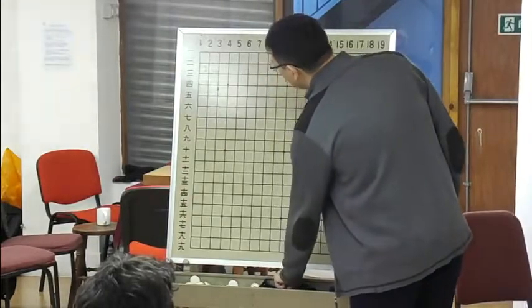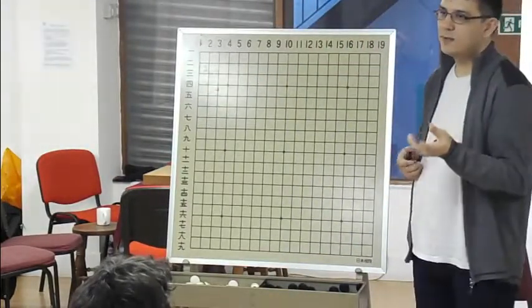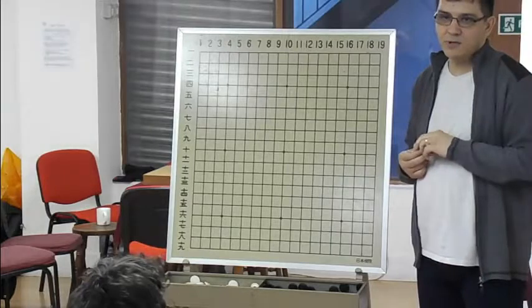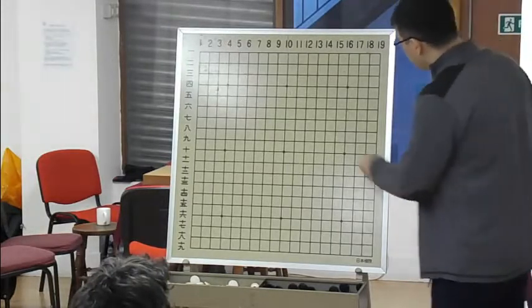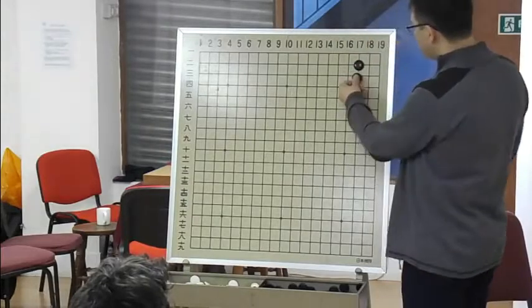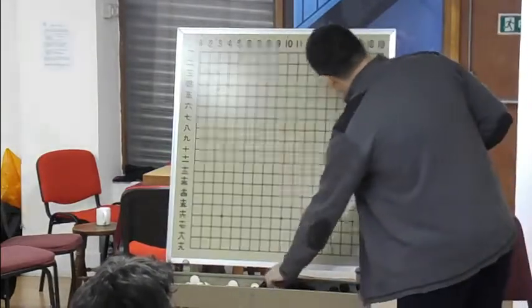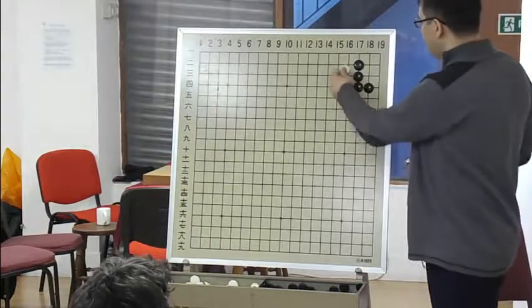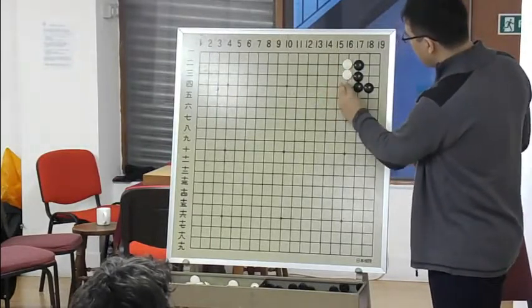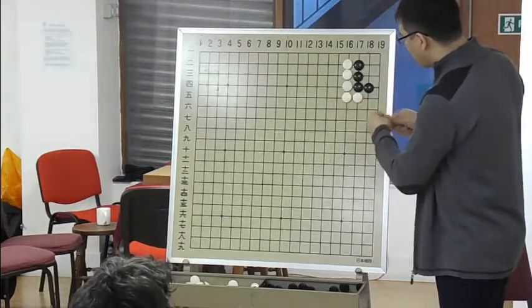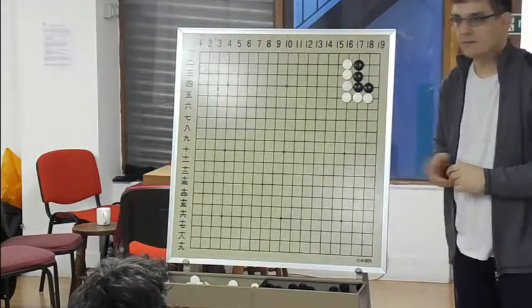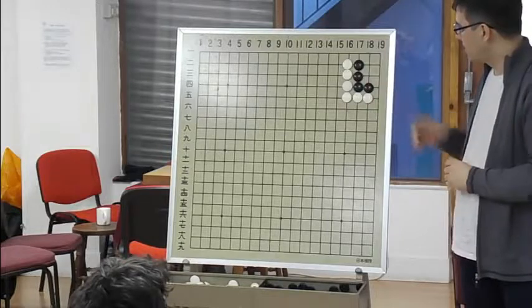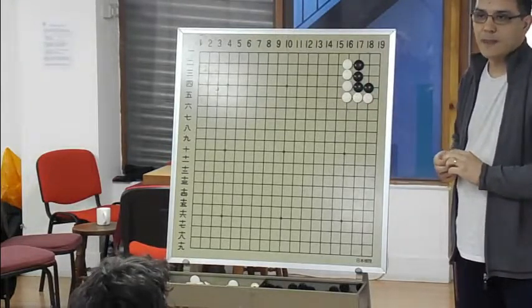I would like to point out that there are some important tsumego that you should absolutely know by heart if you want to be a dan player. One of those, the most important shape, is this L shape in the corner. The knowledge of this shape is essential because it appears very often in sansan invasions.